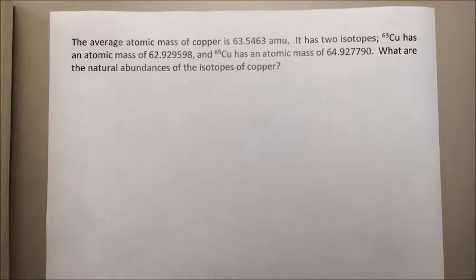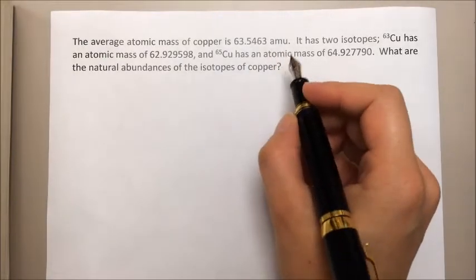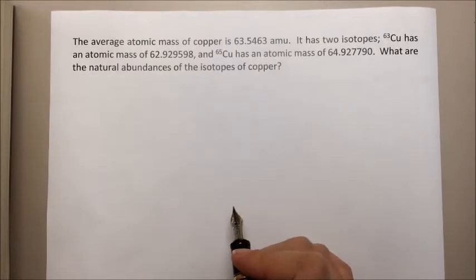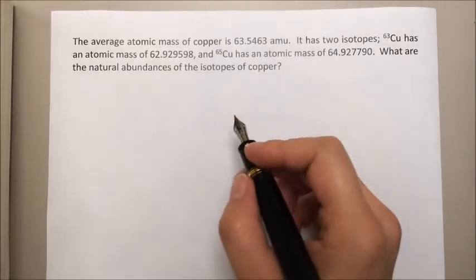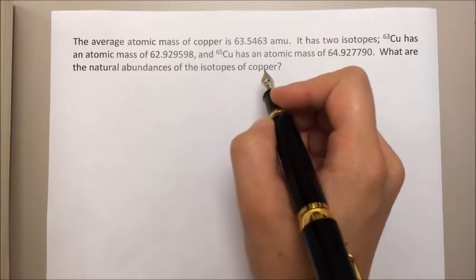We're going to work through a quick problem to calculate the natural abundance of two isotopes from their masses and the average atomic mass of the element in question. The average atomic mass of copper is 63.5463 atomic mass units.